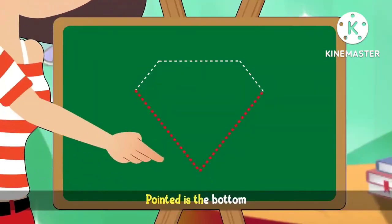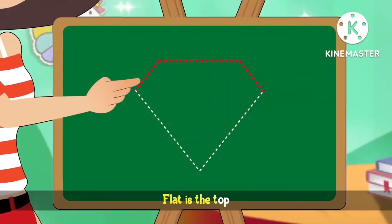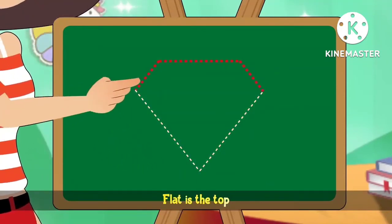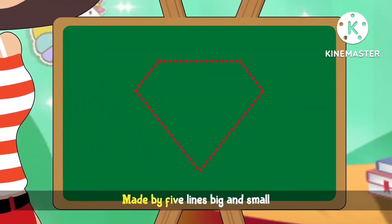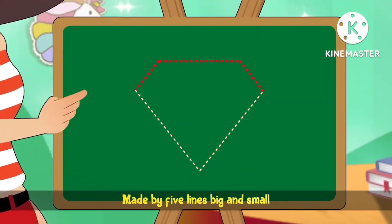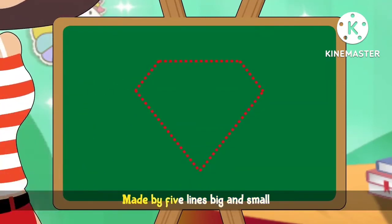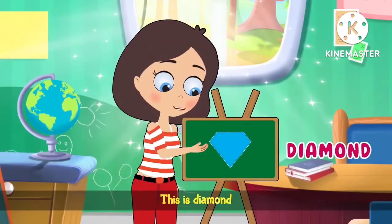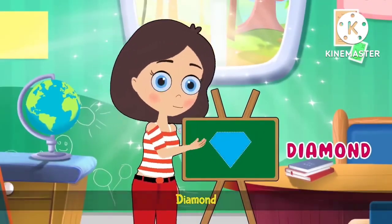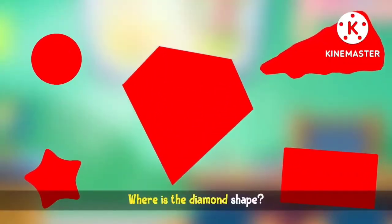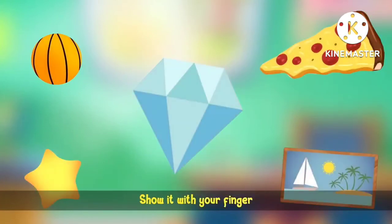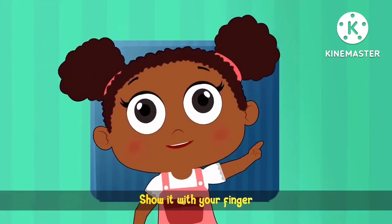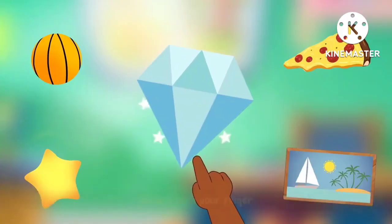Pointed is the bottom, flat is the top. Made by five lines, big and small. This is diamond. Where is the diamond shape? Show it with your finger. Good job!